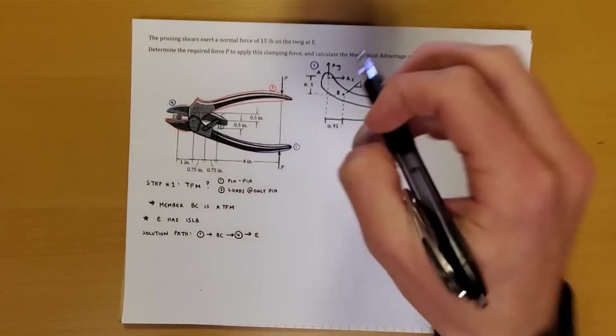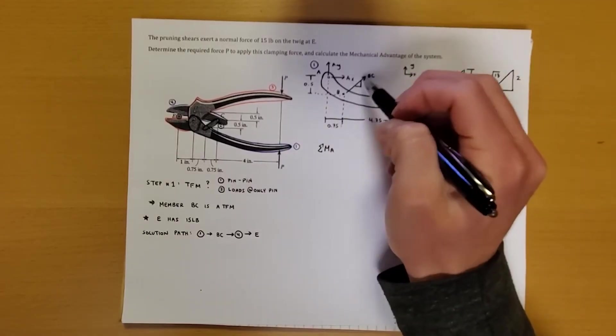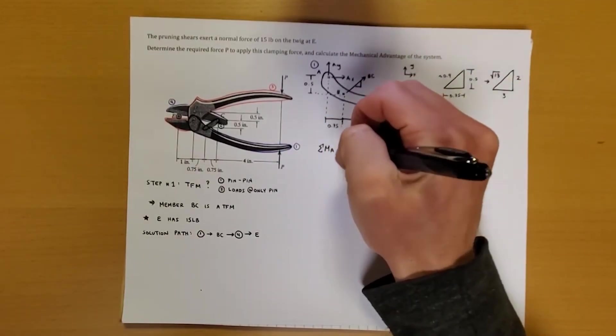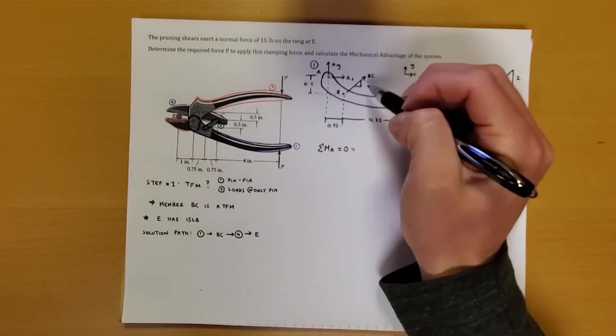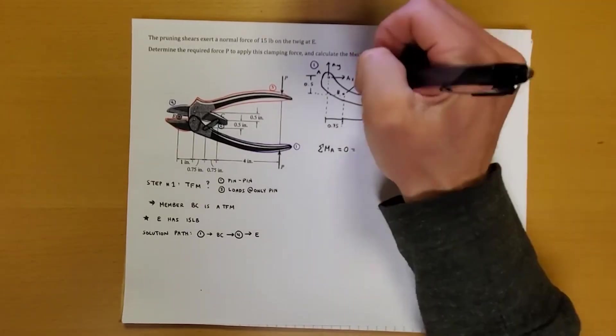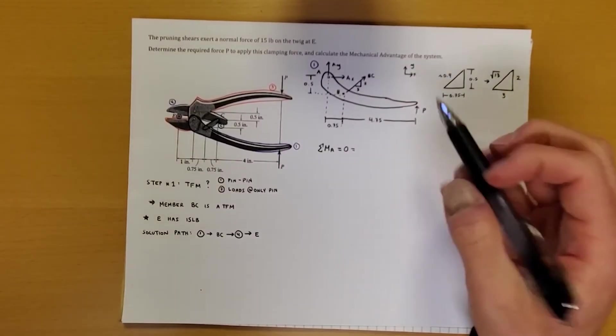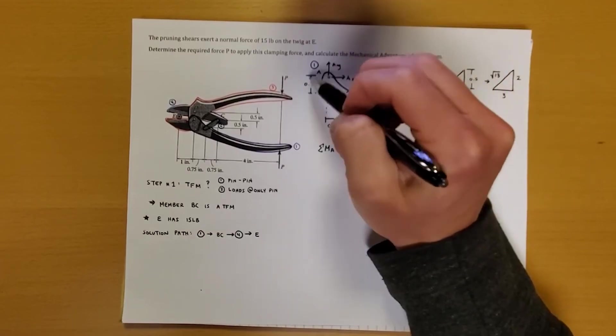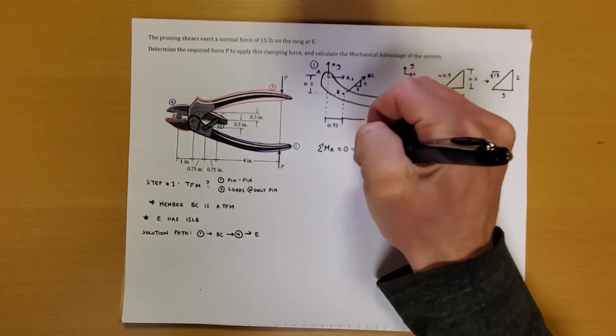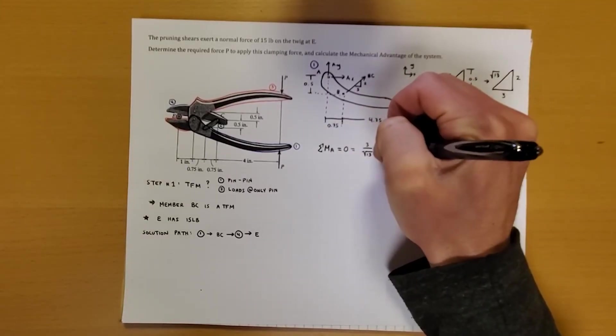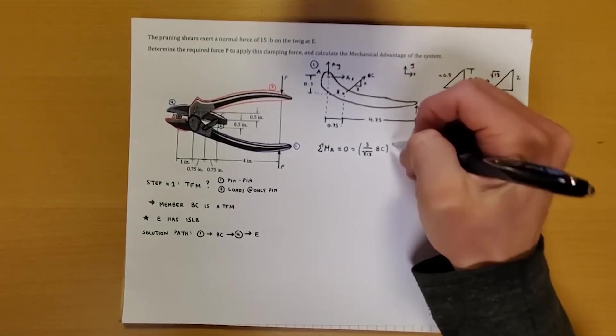Alright, so first thing we can do is we can sum up our moments about point A, because that's a pin and has two things. By doing that, we'll be able to get BC in terms of P. So when we do that, we get sum of the moments about A is equal to 0. So AX and AY don't matter. Now we're going to have an X and a Y component of BC. So I'll just draw this 2 and this 3 over here just so I don't forget. So we're going to have our X component about A is going to go counterclockwise for BC. So we've got plus 3 over root 13 BC times 0.5, which is our moment arm. So here's our force times distance.